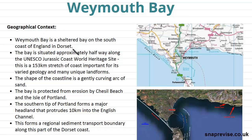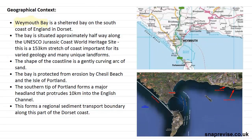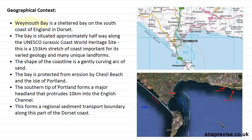Starting with the geographical context, Weymouth Bay is a sheltered bay on the south coast of England in Dorset. This is the Dorset region here, and you can see the area much better on this satellite photo. This being Weymouth Bay, this is Chesil Beach — this very straight line of beach, the barrier beach — and this is the Isle of Portland.